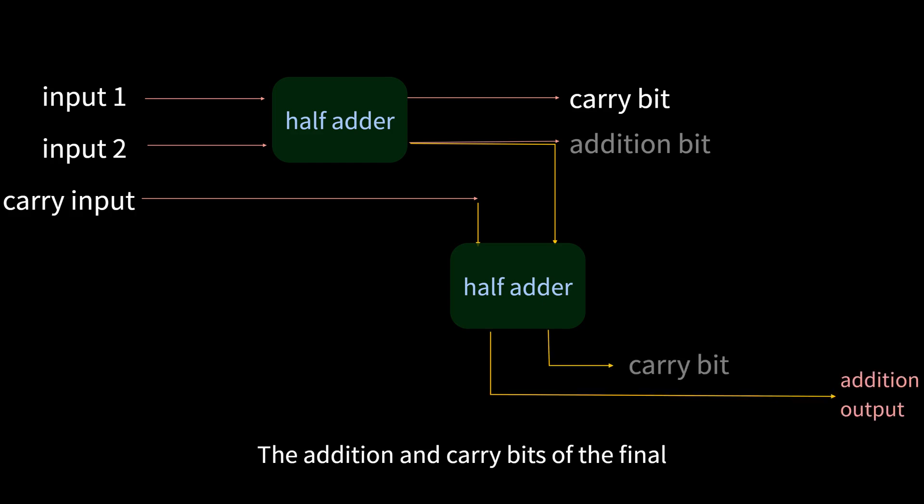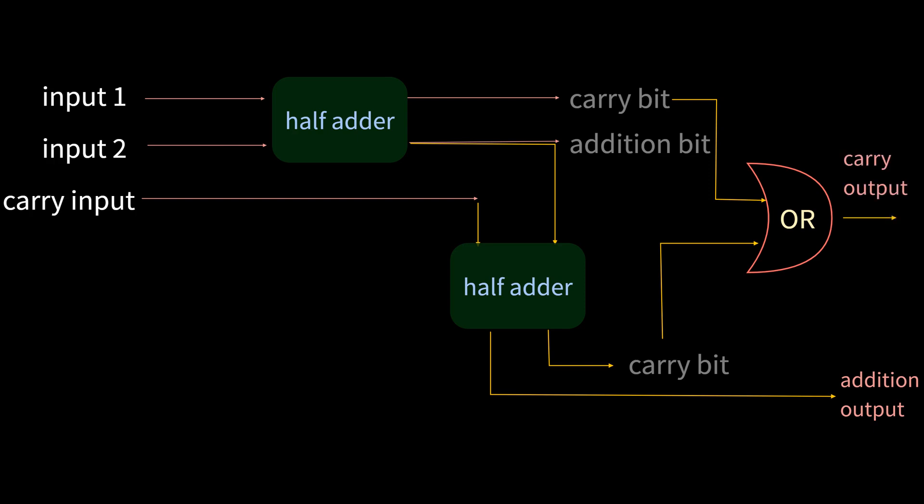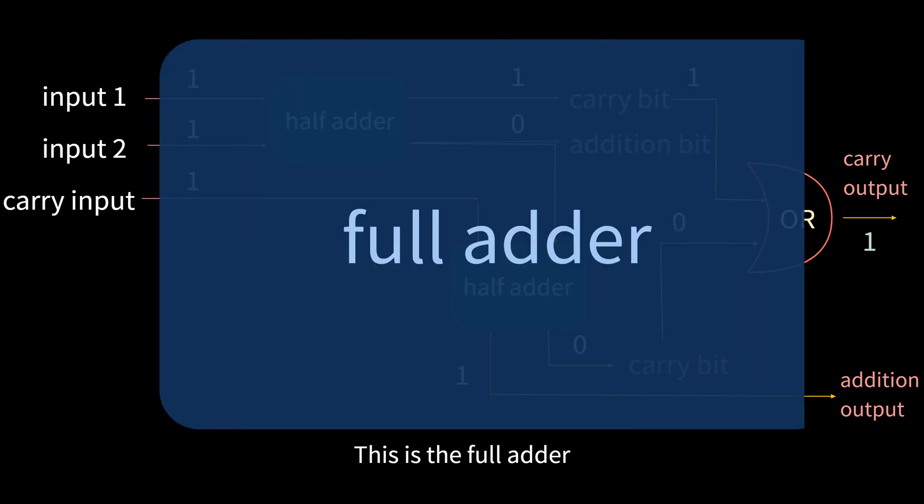The addition and carry bits of the final result are output, then input the output of the two carry bits into the OR gate, and output it as the carry output of the next one. Then, why not use the half adder here? Let's look at the largest input first, that is, all of them are 1. The addition bit is 0. The others are like this. Then the input of the OR gate will have 0. So the traversal will find that the OR gate is enough.